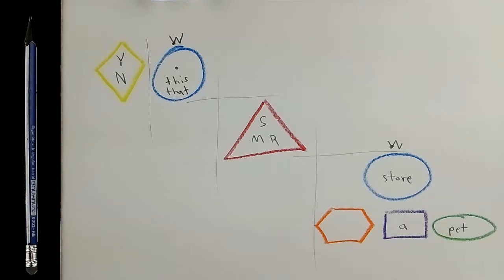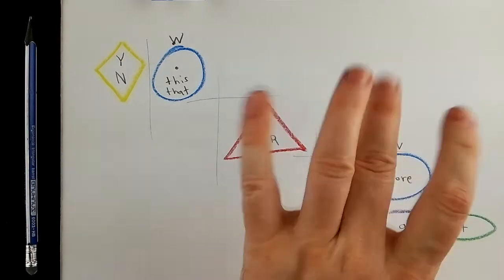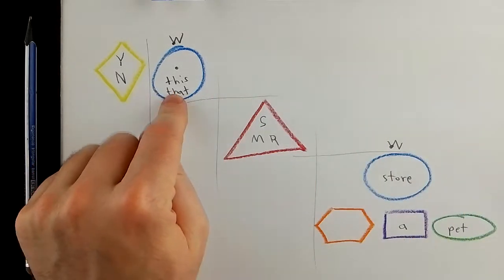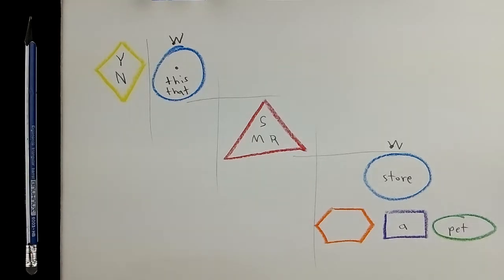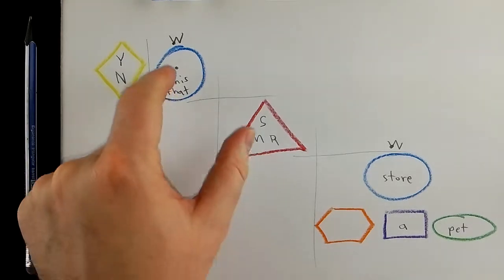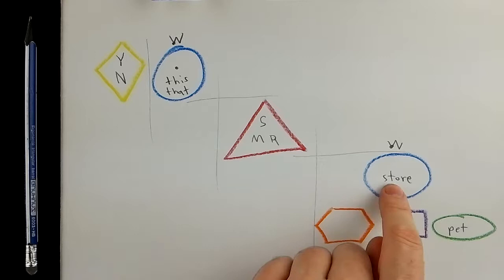Number four A. What's a pet store? Number four B. What is, what's that? Number five. It's a pet store.